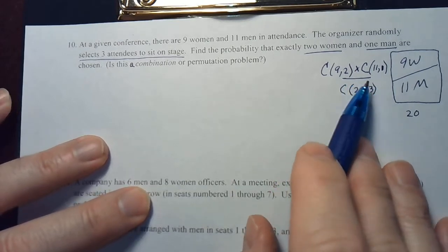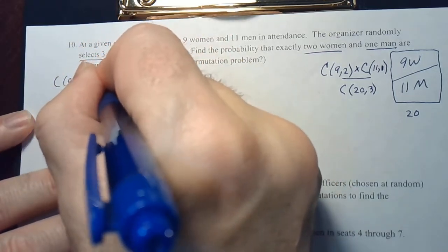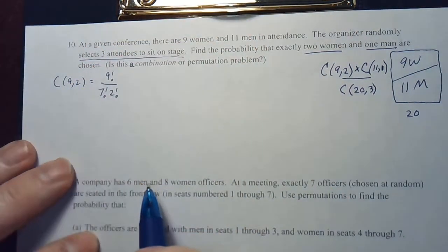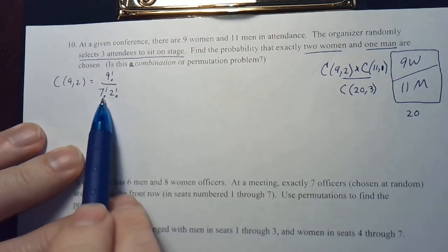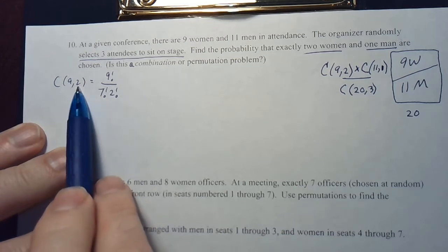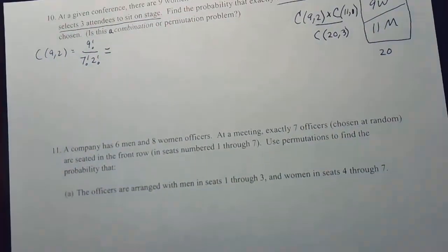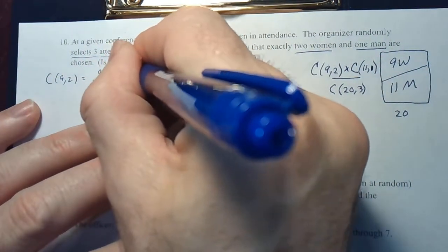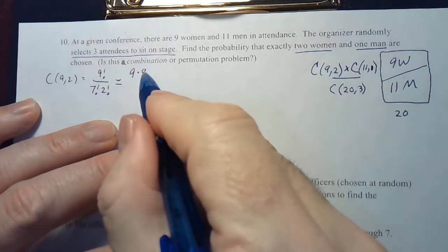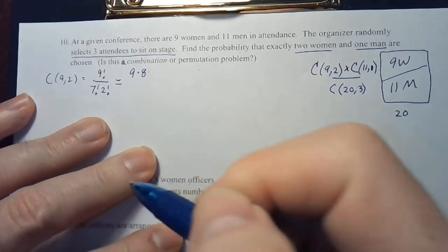Let's work out these numbers. C(9,2) is nine factorial over seven factorial times two factorial. The nine means you get nine factorial on top, and on the bottom you go nine minus two, which is seven factorial, then two factorial. These two numbers always add up to the numerator — seven and two are nine. If you cancel the nine factorial with the seven factorial, you end up with just nine times eight on top.